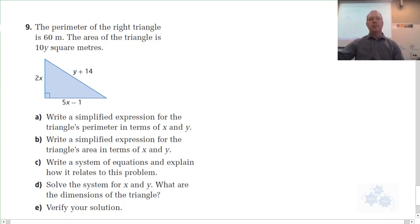the perimeter of a right triangle is 60 meters. The area of the triangle is 10y square meters. So it looks like we can write two equations now, given this information and the diagram.